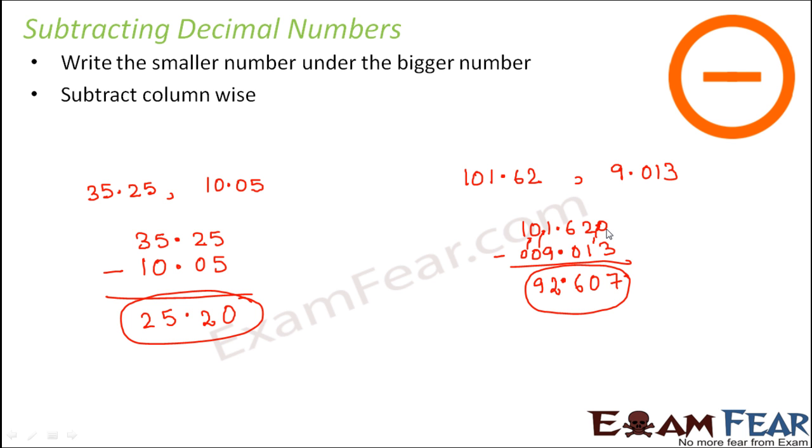Whenever you have a smaller digit on the top, you borrow 1 from the previous number. Like here it was 0, so you borrowed 1 from here and then you again give it back. Right, so that is how you subtract decimal numbers. So I hope that addition and subtraction of decimal numbers are clear to you.